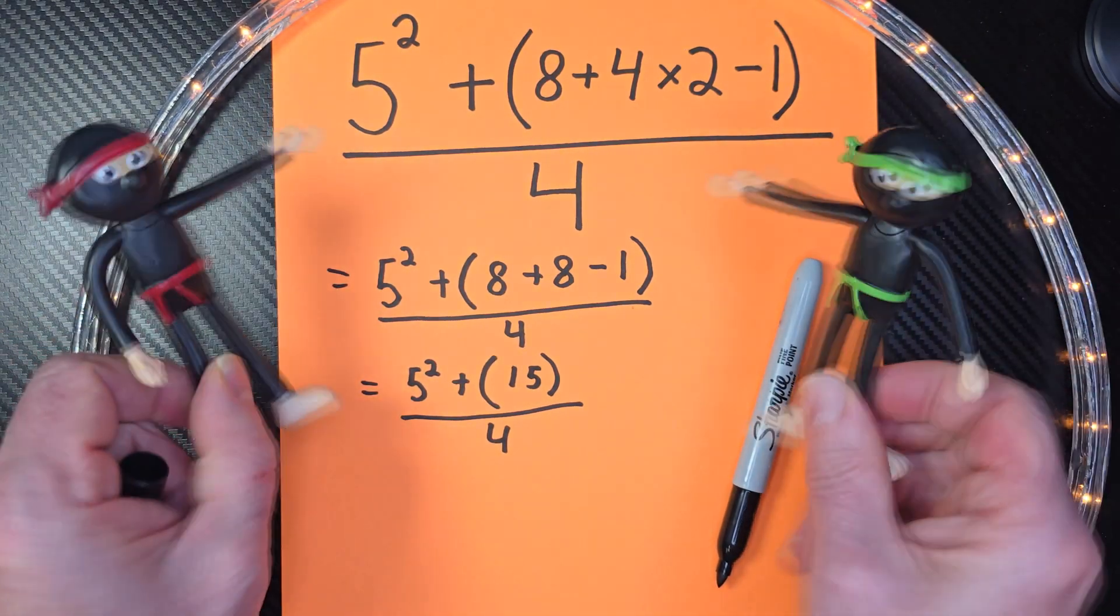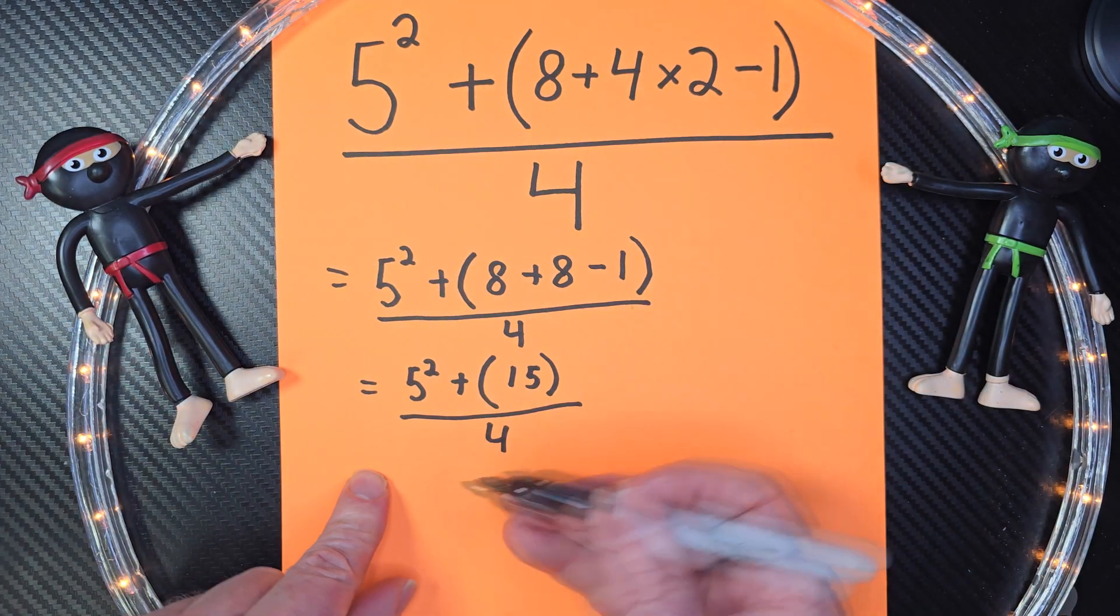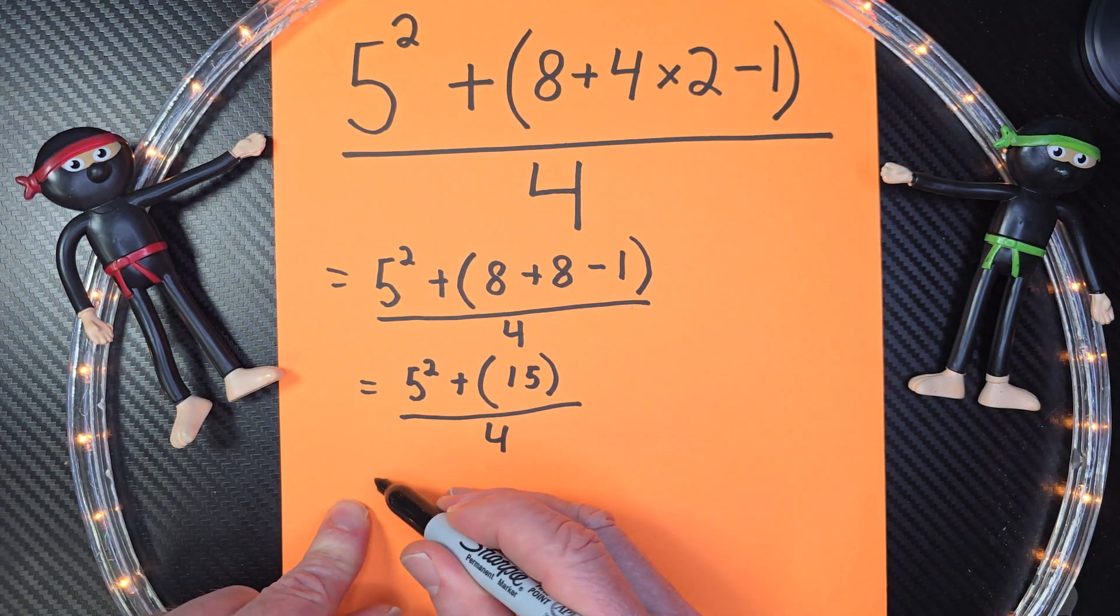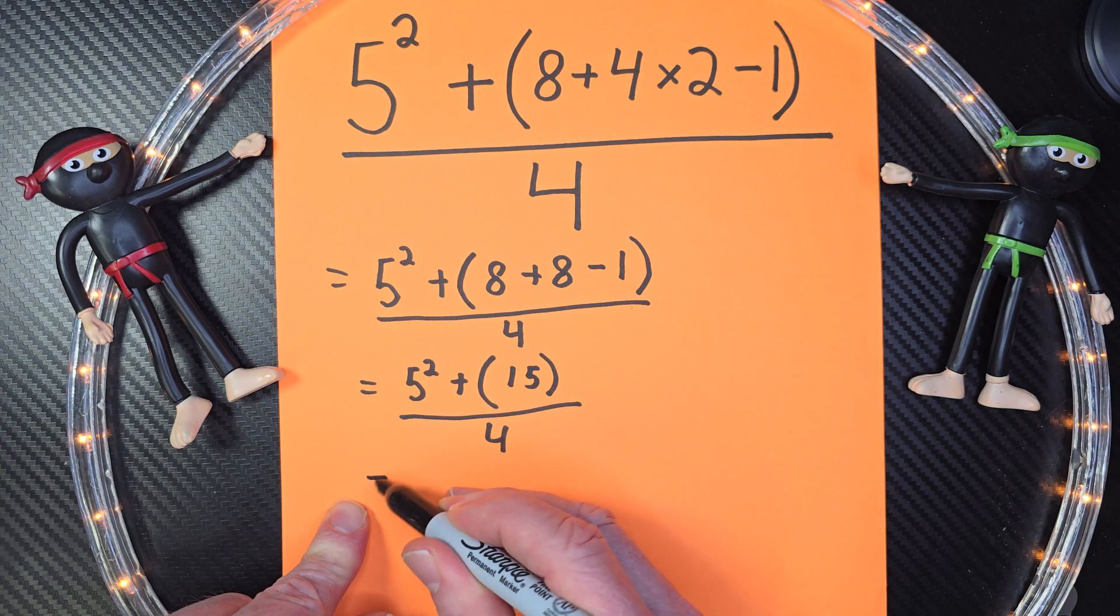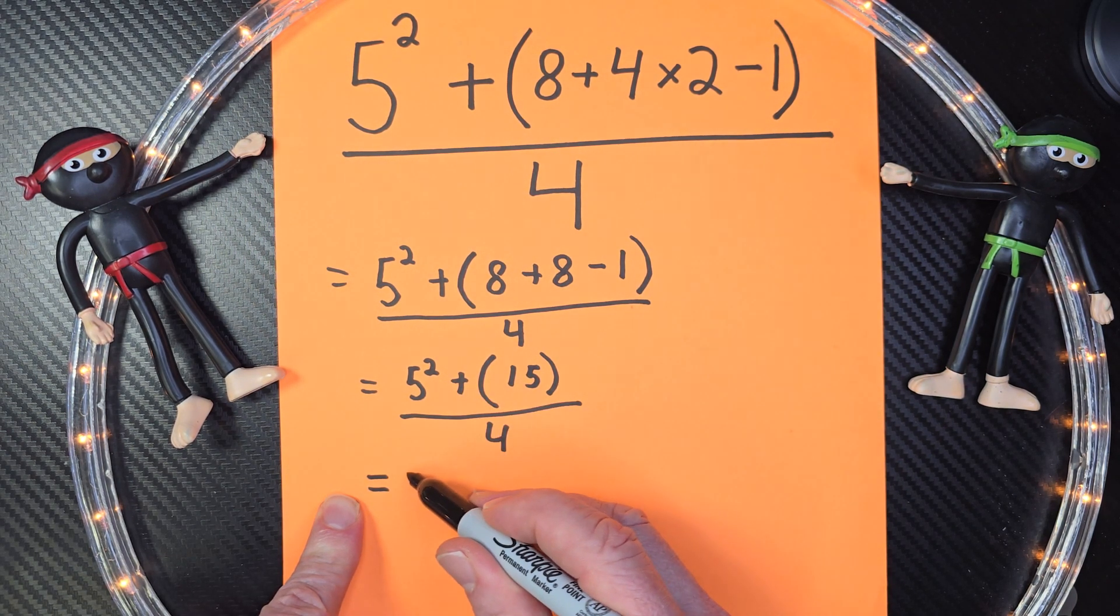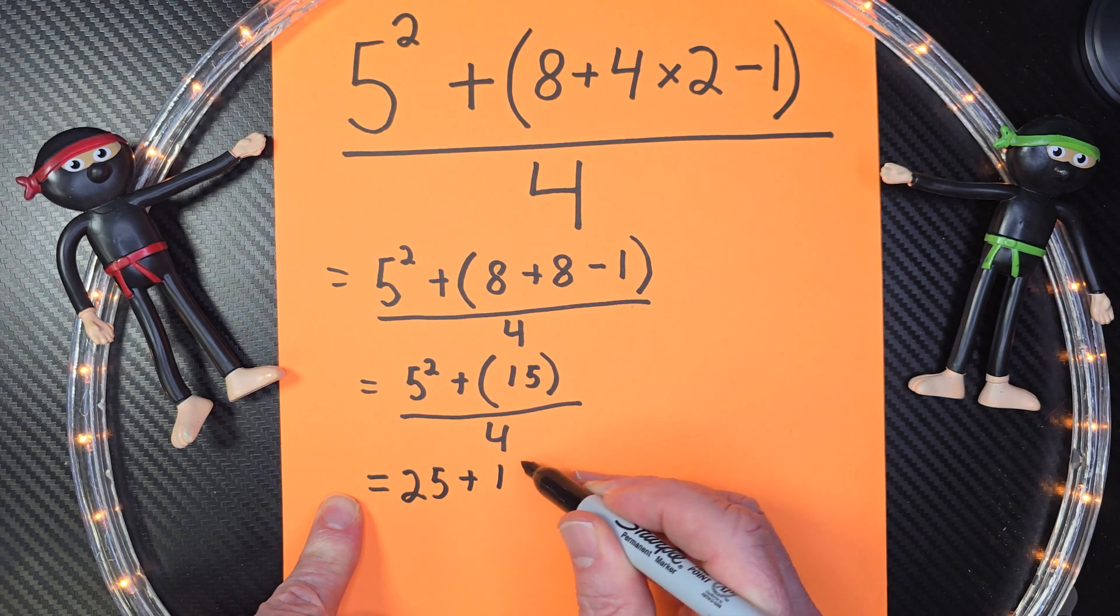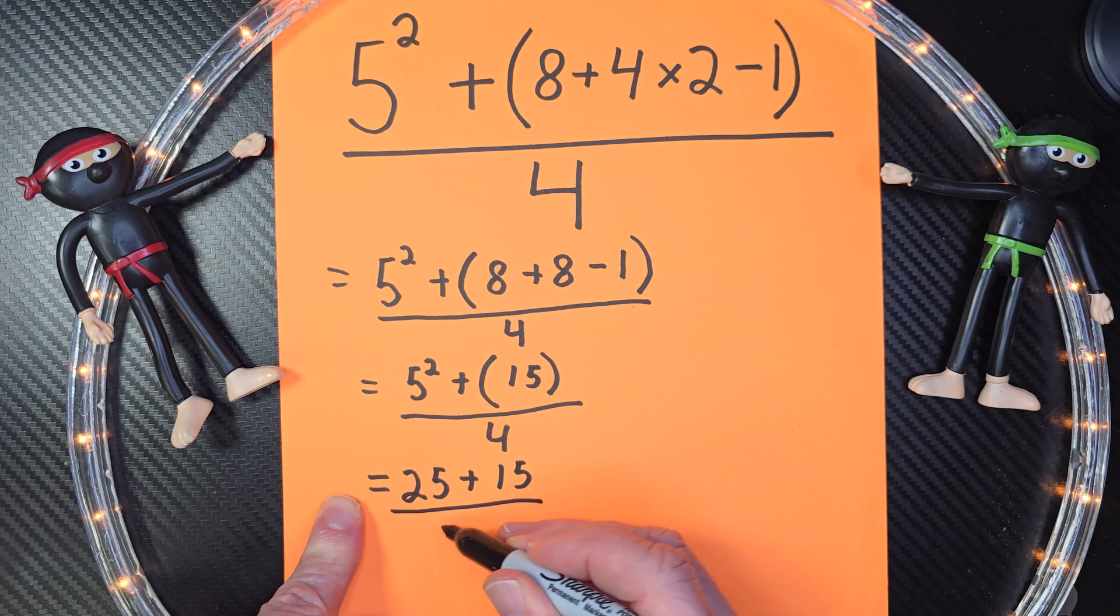All right. Ready for the next step? Yes, we are ready for the next step. We got to make math fun, don't we? Let's go ahead and do the exponent. 5 to the second power is 25 plus 15, all over 4.